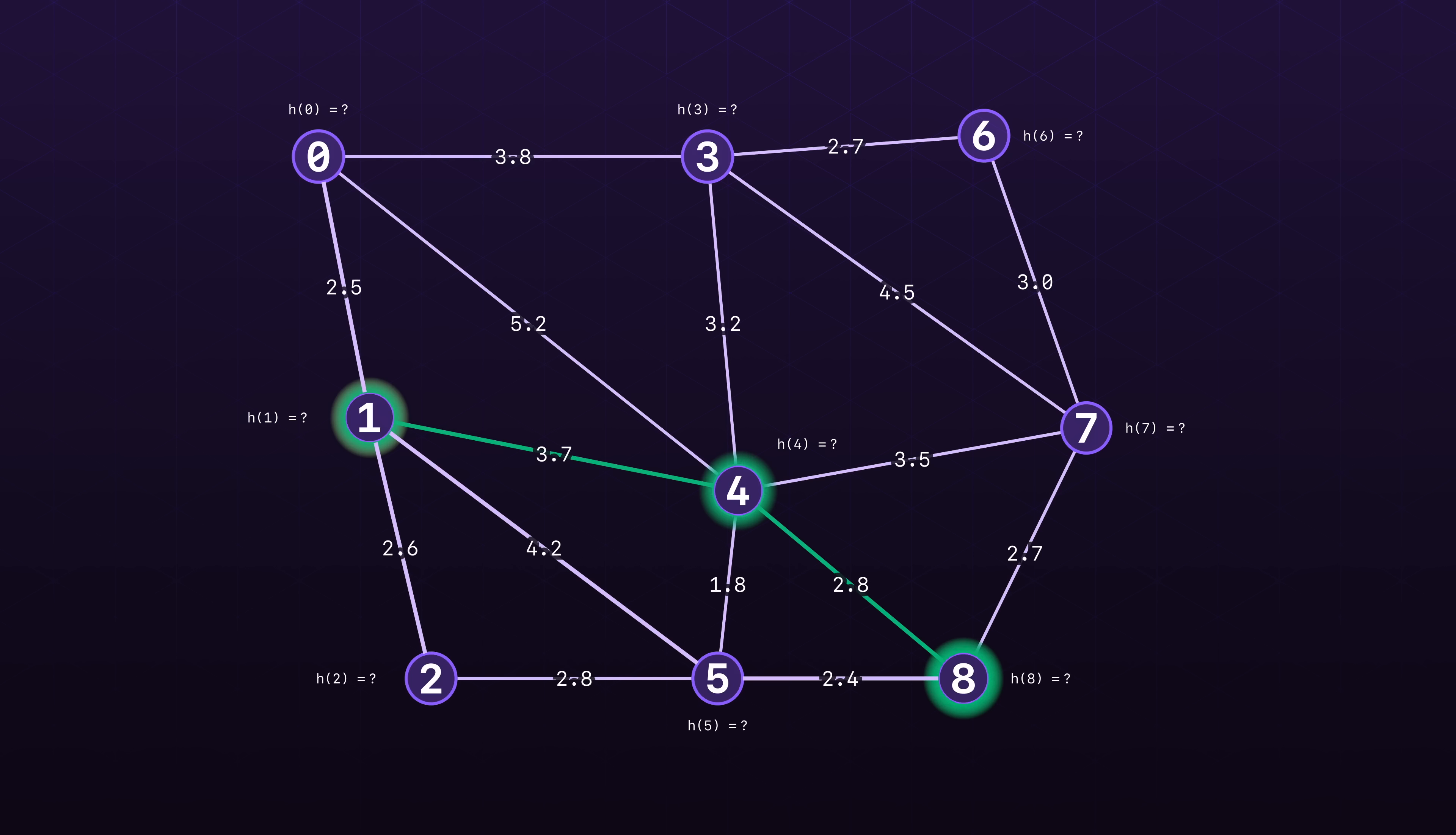Suppose instead of using Euclidean distance as a heuristic, we instead define another heuristic that takes something called the Manhattan distance. The Manhattan distance is defined as a total vertical and horizontal distance that needs to be traversed between two points. With the Manhattan distance as the heuristic, do we think that A star search will find the optimal path?